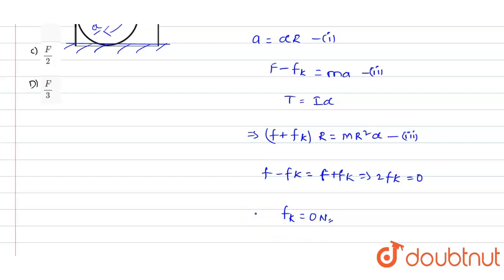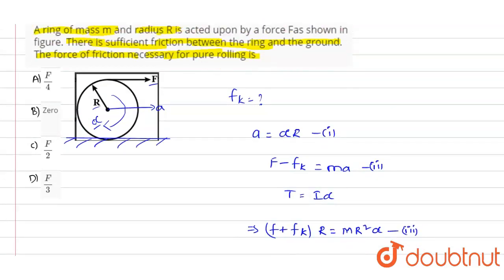Out of these four options, if you observe option B, we have zero. So this is the value of the frictional force which is necessary for the pure rolling. So option B is the correct answer for this question.